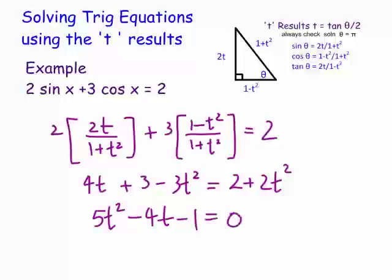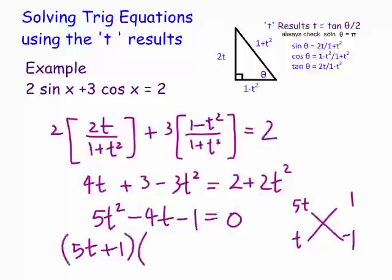We need to factor this. Using the cross method with 5t² down the left, factors of −1 on the right — we need −4t as the middle term, so we make −5 and add 1, giving (5t + 1)(t − 1) = 0. If we couldn't factor, we'd use the quadratic formula: x = (−b ± √(b² − 4ac)) / 2a.